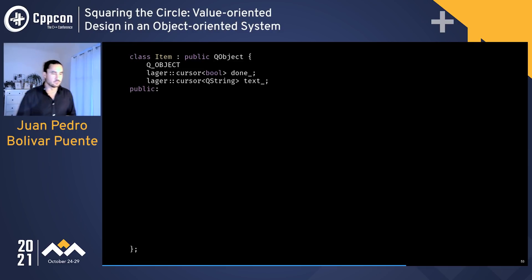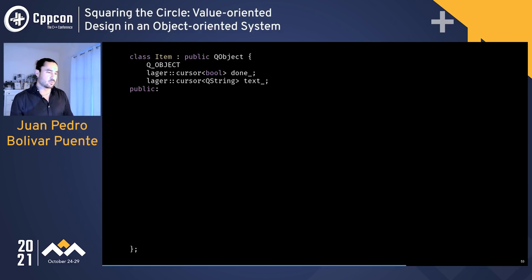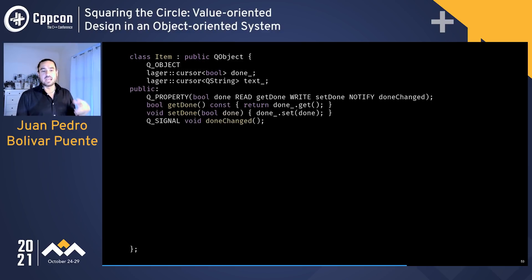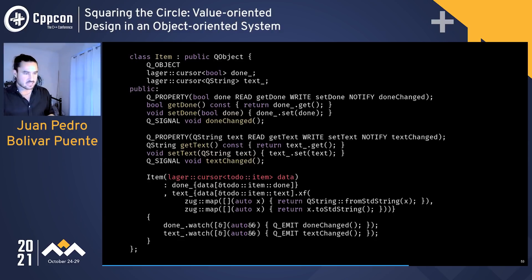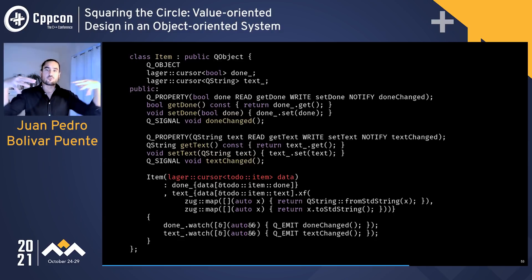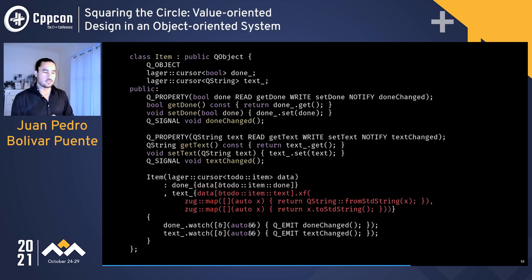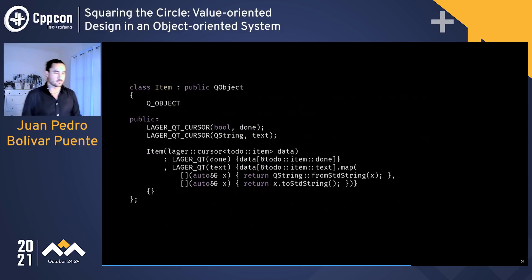Since we've studied cursors, we can write wrappers that adapt this value data model to the QObject interface. For example, a to-do item wrapper has cursors for the properties it wants to expose to QML, and systematically implements getters, setters, and signals by forwarding to those cursors. In the constructor, we construct the object with a cursor for the to-do item itself and then slice it using transducers and lenses to bind the data to the right places.